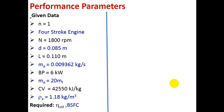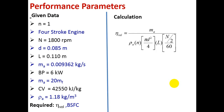Required: volumetric efficiency and brake specific fuel consumption (BSFC). The formula for volumetric efficiency is: mA / (ρA × n × (π/4 × D²) × L × (N/2) / 60). We put N/2 because it is a 4-stroke engine, and divide by 60 to convert RPM to RPS. Substituting all known values, volumetric efficiency = 0.8473, expressed as a percentage: 84.73%.